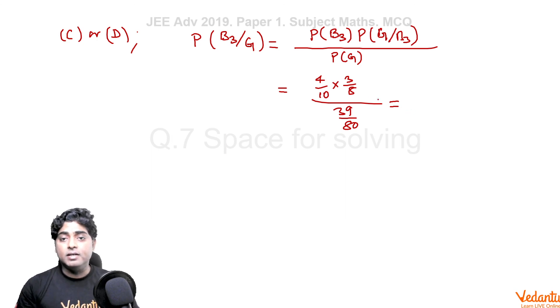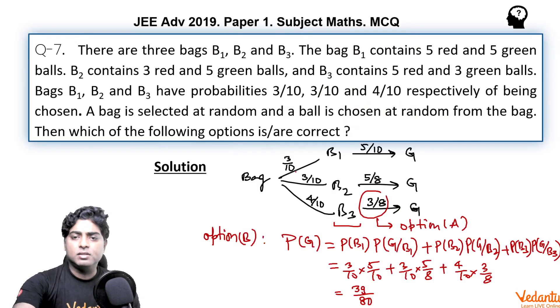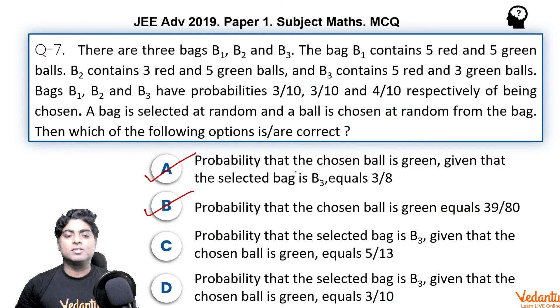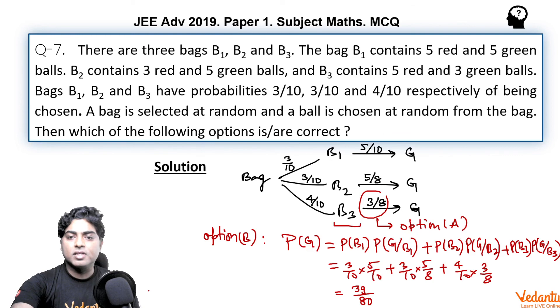We can easily see the answer to this probability. The probability of B3 given green must be 12 upon 39. That is 4 upon 13, I think. We will see 4 upon 13 is given in any of the options or not. None of the option C or D is saying it is 4 by 13. So C or D is not correct. Final answer to this question are A and B.